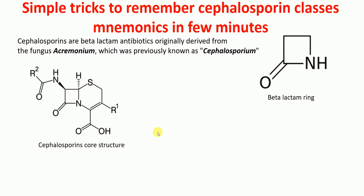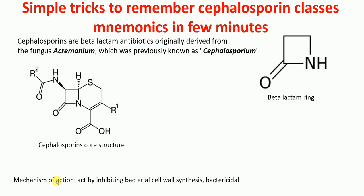So how do cephalosporins function? The mechanism of action of cephalosporin is by the inhibition of bacterial cell wall synthesis. So they inhibit bacterial cell wall synthesis, and therefore they have bactericidal effects. What they do is basically they disrupt peptidoglycan synthesis, which is required for the integrity of the cell wall of the bacteria.